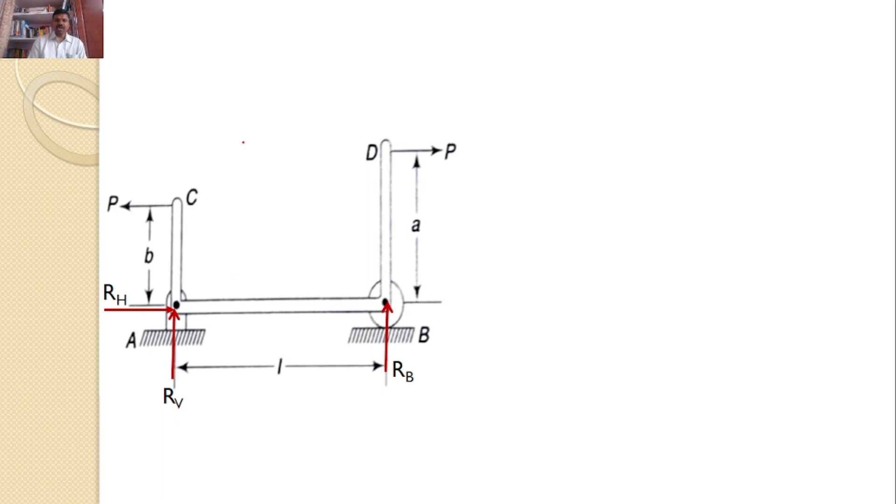Now let us also consider the moments about point A. RH and RV are passing through point A so they will not introduce any moments. This P will introduce a moment in this direction, this P will also introduce a moment in this direction, and RB will introduce a moment in this direction.